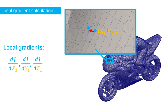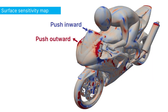Now, to obtain the local gradient, you would need to move one node individually, redo the entire aerodynamic simulation, and then calculate the local gradient. Once you have obtained all of these local gradients, you can put them all together and construct what is called a sensitivity map.